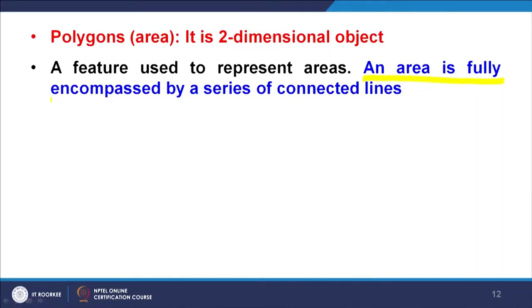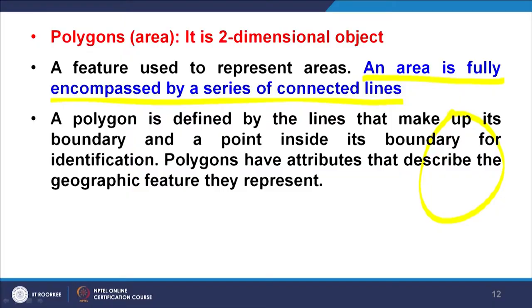An area is fully encompassed by a series of connected lines. If this is my begin node and I come back after that, my begin node and end node has to be the same — then only it makes an area and closes the polyline. So it is a higher version of polyline where the condition is that begin node and end node must be same — x1, y1 and xn, yn must be the same. Whereas for line or polyline, x1, y1 and xn, yn need not be the same. Polygon is defined by lines that make up the boundary, with a point inside its boundary for identification — that we also call the centroid.